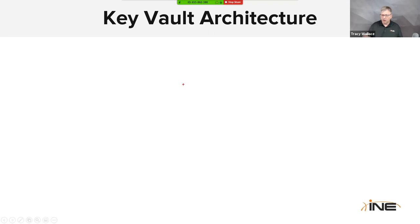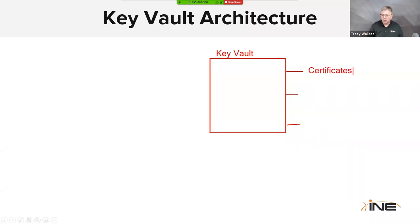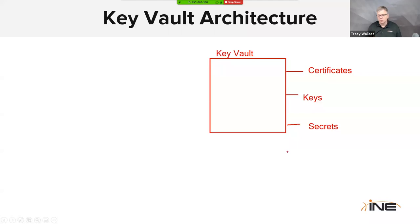First, we have the entity that is Key Vault. Within Key Vault, there are three types of data stored: certificates, which are X.509 certificates; keys, which are standard key files; and secrets, which are really any kind of encrypted string data you need to store.